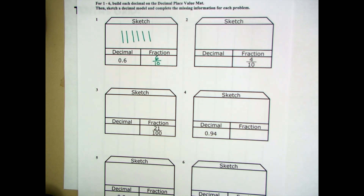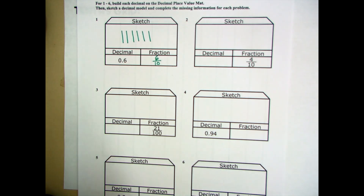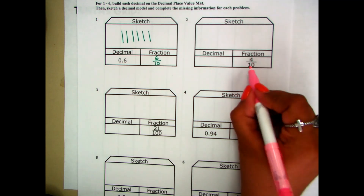We're ready for number one, so now we're going to move on to number two. Here we're already given our fraction. We're going to use this fraction information to figure out what we need to do. This is saying I have four-tenths.